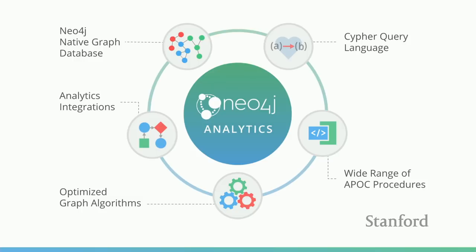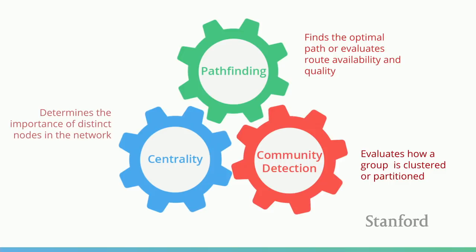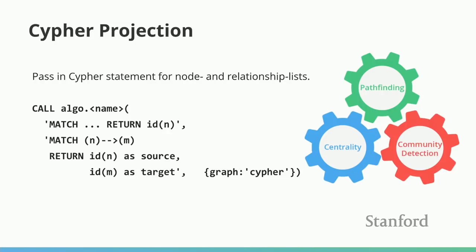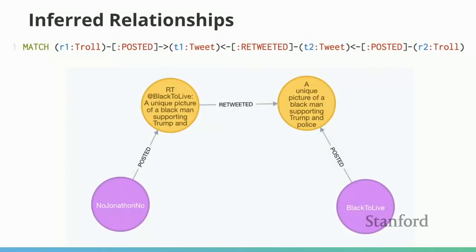The algorithms — centrality, community detection, pathfinding — all share a similar API: calling the procedure from Cypher, either passing in the label and relationship type you're interested in traversing, or passing in a projection of the graph. This piece is really important, because it means you can define an inferred graph in Cypher — a graph that doesn't actually exist in the data — and run graph algorithms on that network. That's actually most of the time what you want, because those inferred relationships are often what you're interested in.